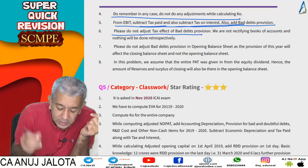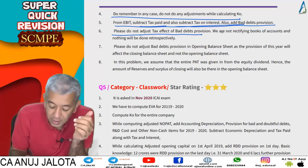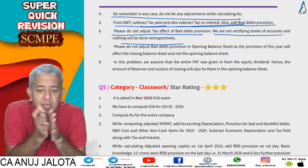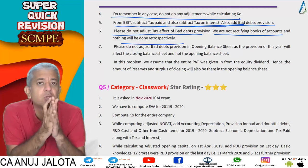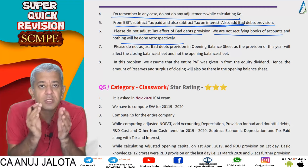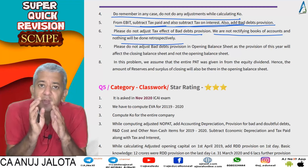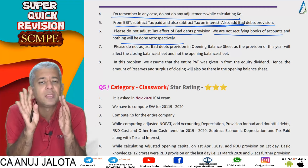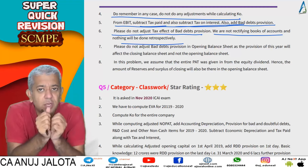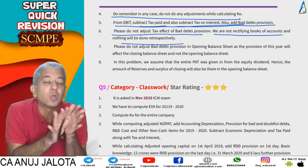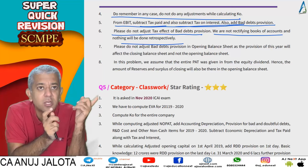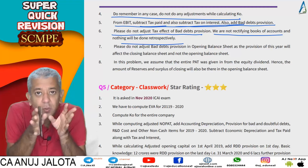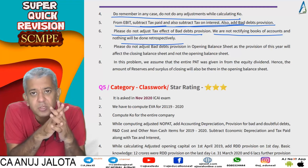Do not adjust the tax effect of bad debt provision — we are not rectifying the books of accounts and nothing will be done retrospectively. Some people think: if bad debts are removed, taxes will also change. The answer is no. Once you arrive at NOPAT, all adjustments are done without their tax effect. Also, do not try to rectify things retrospectively — your EVA can never be calculated that way; you'd have to go back to the first day of business.